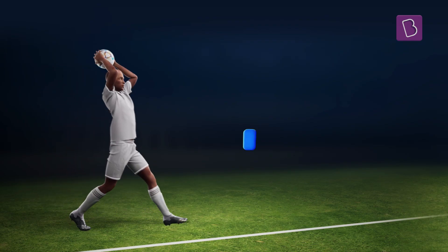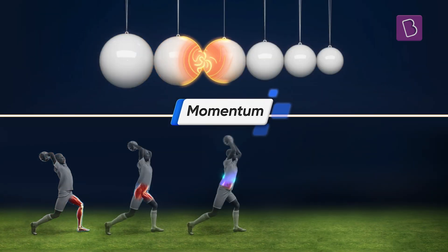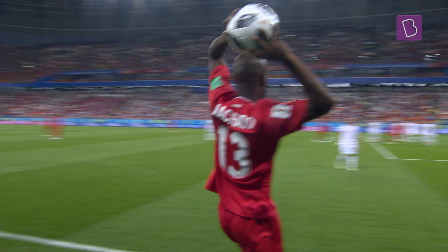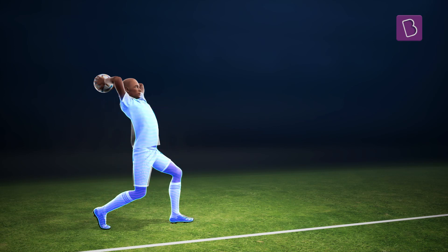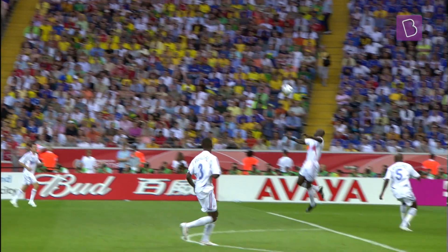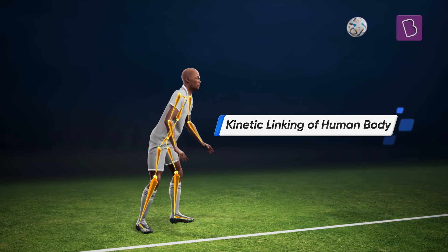Similarly, the momentum generated by the player's run-up travels through the bigger muscles of the body to the successively smaller muscles, that eventually results in a blistering throw. This movement of larger segments of the body to accelerate the smaller segments, forming a link or chain producing a greater final output, is termed as the principle of kinetic linking of the human body.